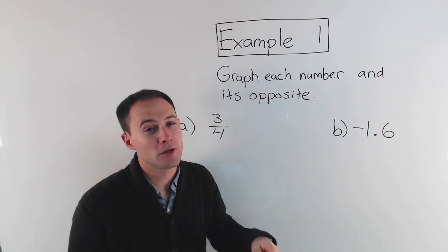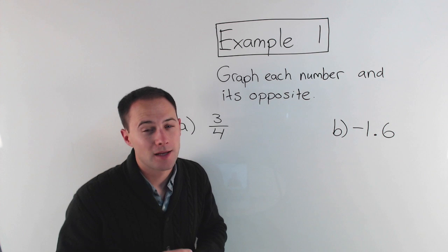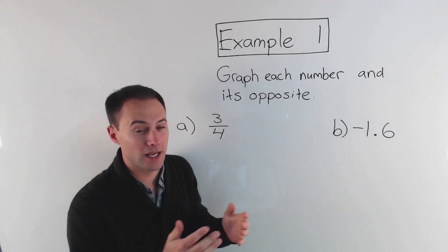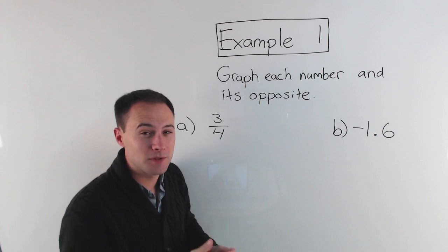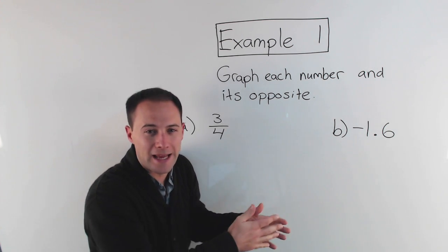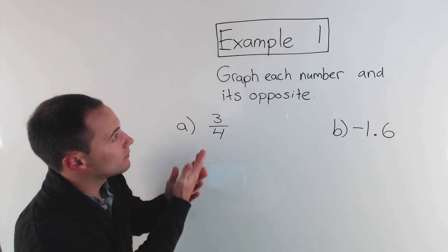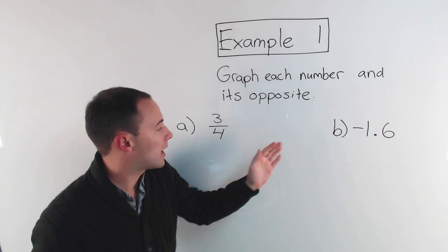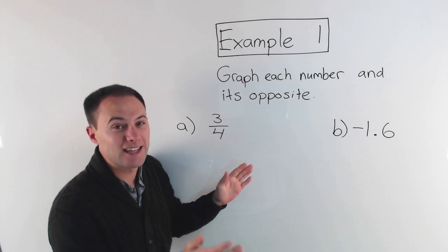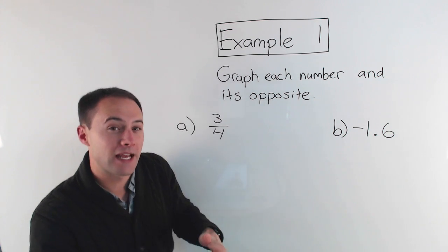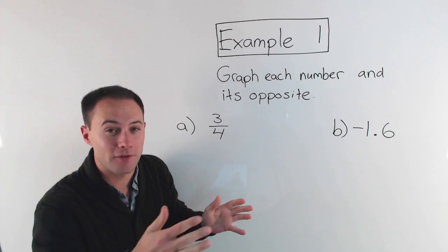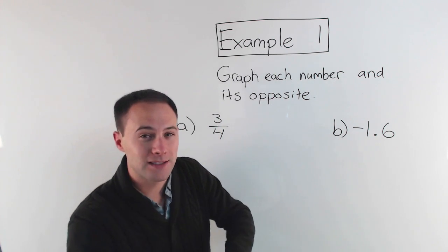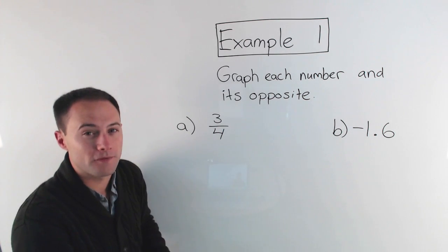Today we're going to be dealing with fractions and decimals. You should know that just like integers have positive and negative values, fractions and decimals also have positive and negative values. For the first example, we're going to graph each number and its opposite. Every fraction has its opposite — a positive fraction would have a negative opposite, and a negative decimal would have a positive opposite. We're going to graph both.